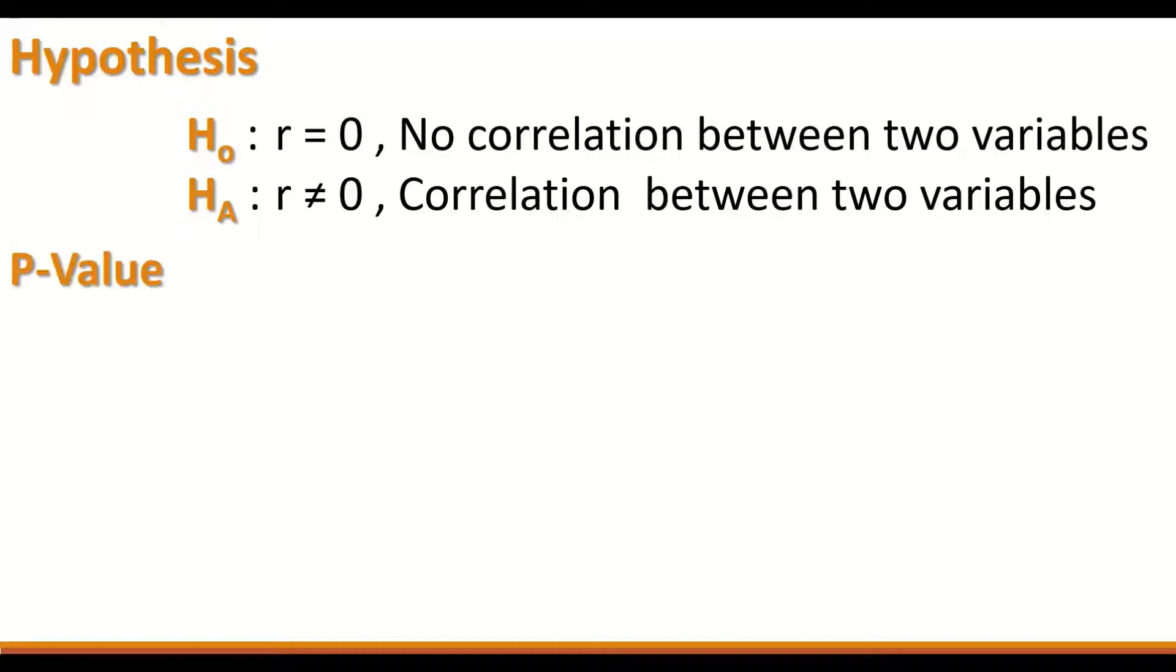Once you perform the test, a P-value is generated. If it is less than 0.05, that indicates a significant value and will lead to accepting the alternative hypothesis.